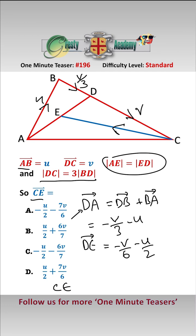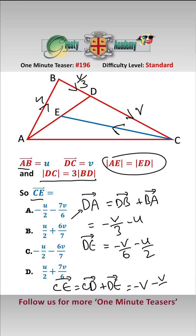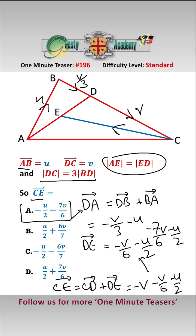So now we can finally get what we want, which is CE. That equals CD add DE. We know that CD is equal to minus V, and then minus V over 6 minus U over 2, which is DE. That equals minus 7V over 6 minus U over 2, which is answer A.